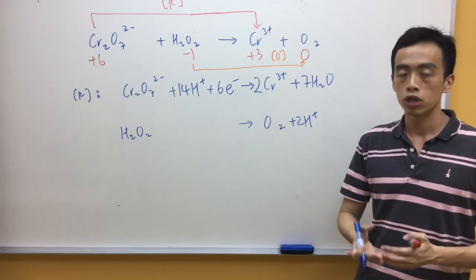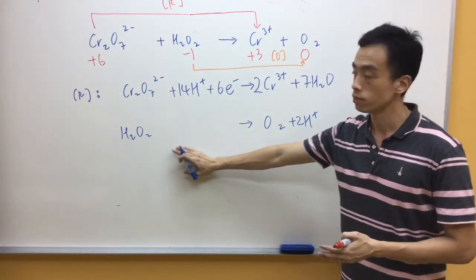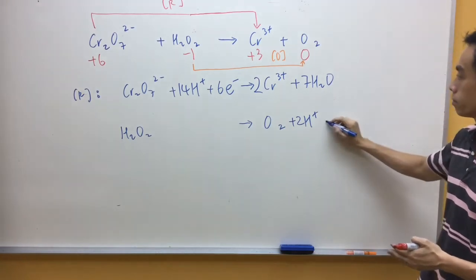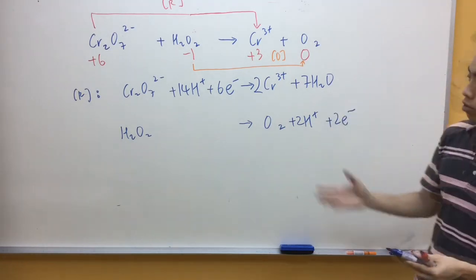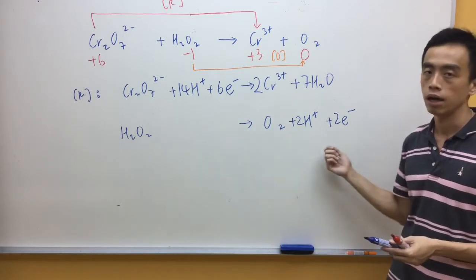Then after that I need to balance charge using electrons. Left hand side is neutral. Right hand side I have +2 charges. So I need to add electrons on the right hand side. So this is how we write down the oxidation half equation of my hydrogen peroxide.